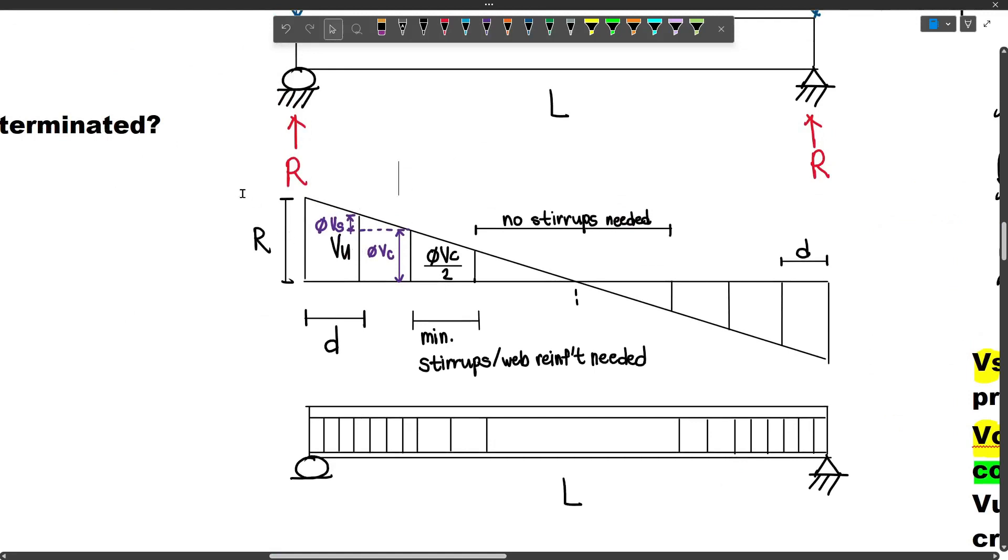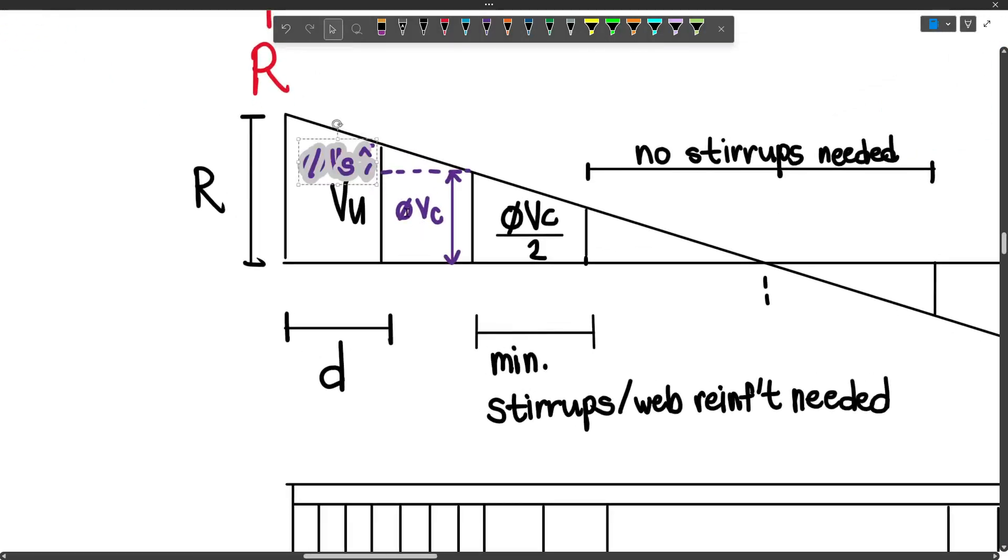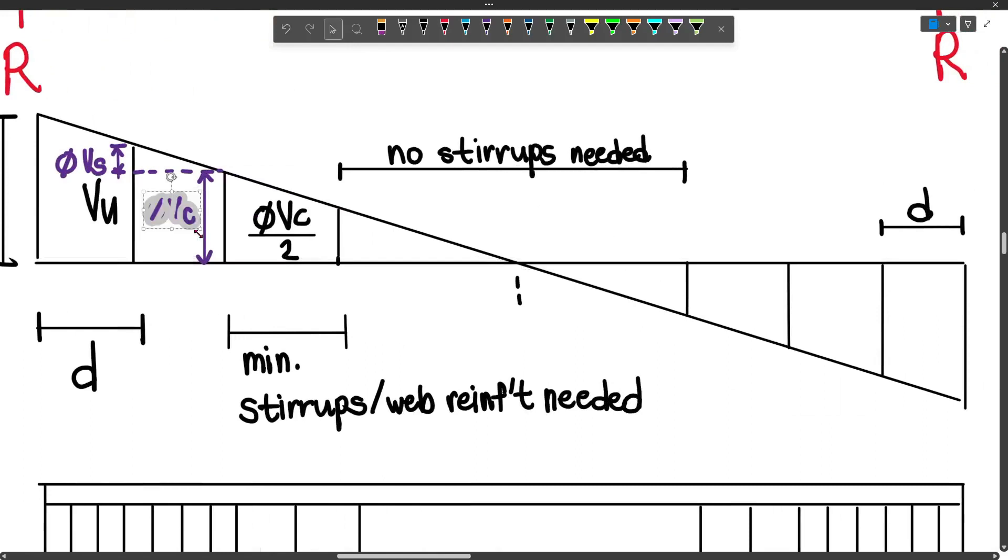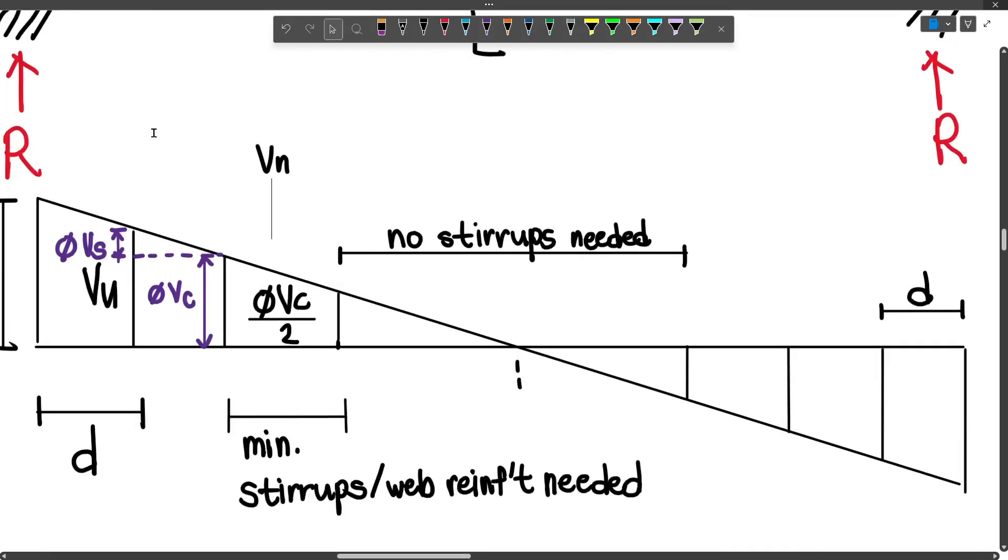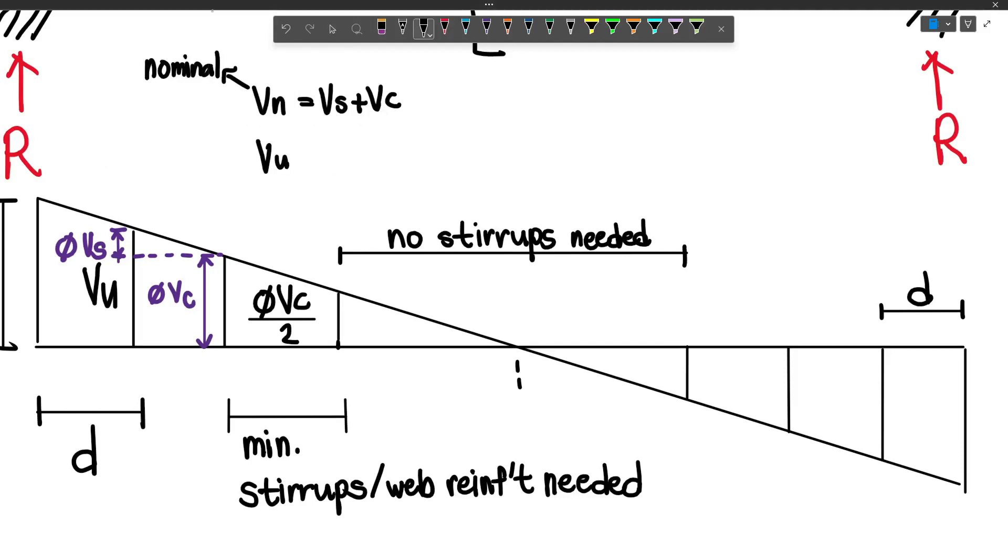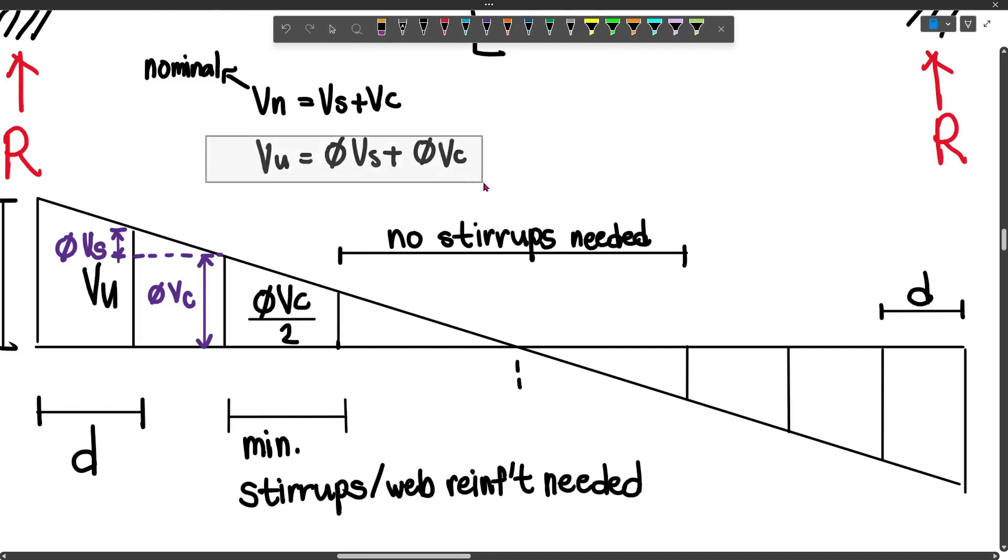The maximum shear is at the support where the reaction is. However, the VU we consider is at a distance d from the support. Notice that we have VS and phi VC. phi VS is the factored shear strength provided by the stirrups, and phi VC is the factored shear strength provided by the concrete. That's why if we're looking for VN or nominal shear, our formula is VS plus VC.